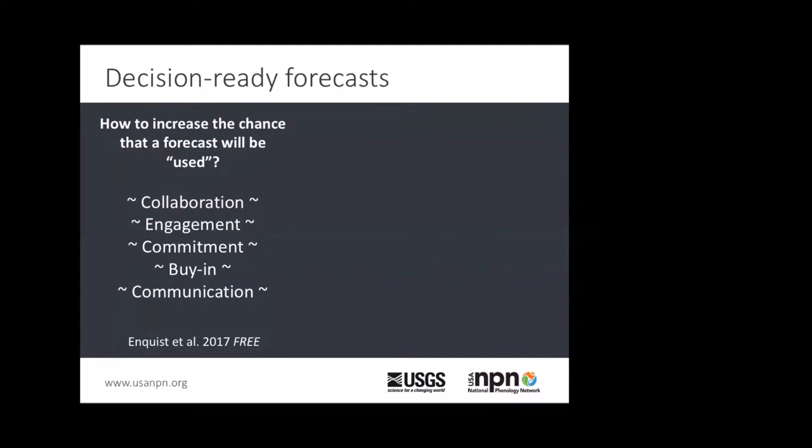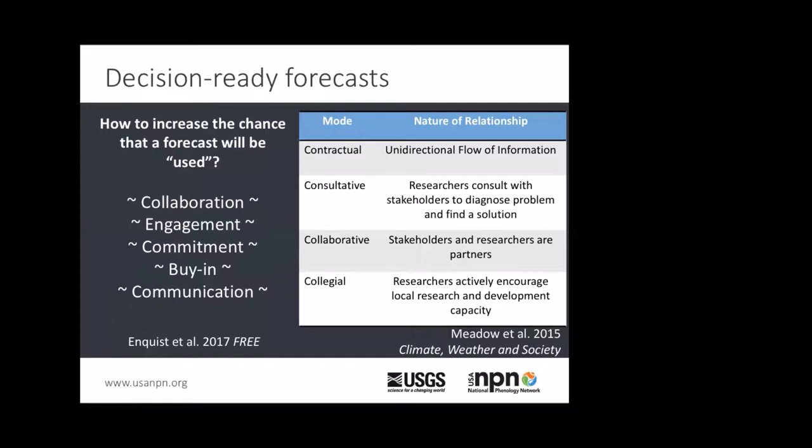These best practices include collaboration, engagement, commitment, buy-in, and communication. I'll put the reference here for the Enquist et al. paper from 2017. There was a special issue in Frontiers in Ecology and Evolution about translational ecology that really laid the groundwork for providing a framework for how to do this kind of work, and also how to evaluate this kind of work.